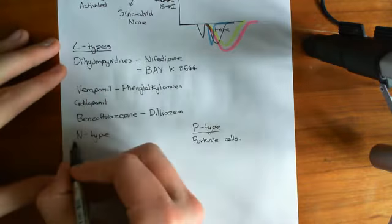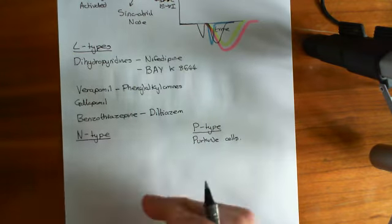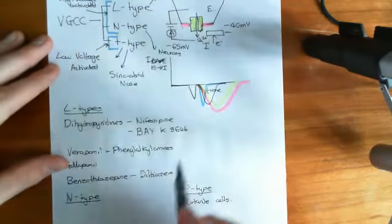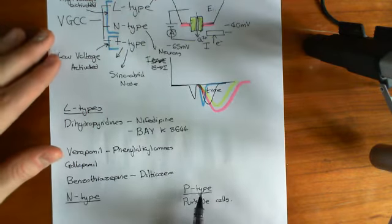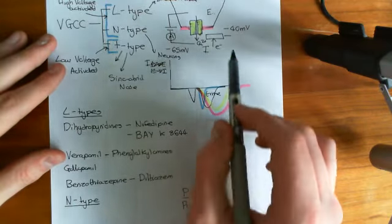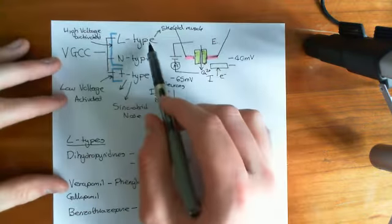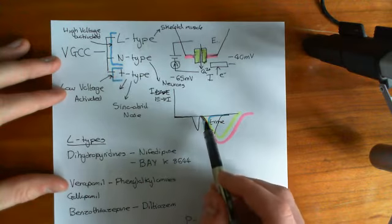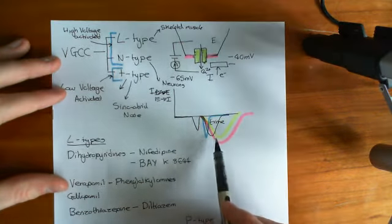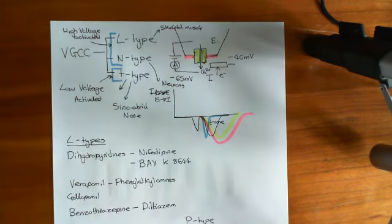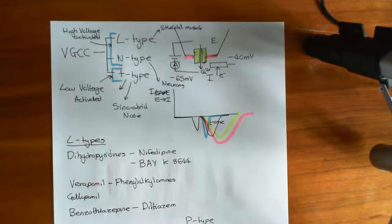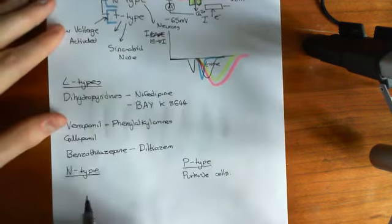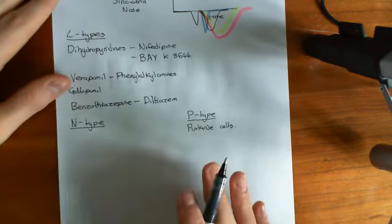What happened is that we were doing patch-clamp experiments. You could not tell the difference between these two types of channel just by looking at their conductance with response to a stimulating electrode. One of the ways we originally told the difference between L, N, and T-type was that their traces on the patch-clamp experiment look different — their conductance of calcium and the time course of their stimulation differs from one another. These two couldn't be told apart using that mechanism.